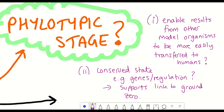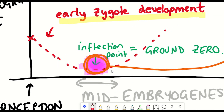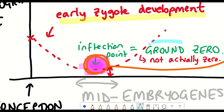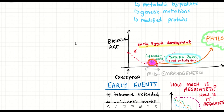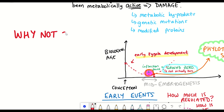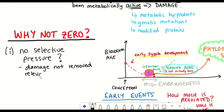Another interesting point in this article is that the biological age at ground zero must be above zero — that is, biological age never effectively reaches zero. Two key points support this. Firstly, during early embryogenesis, when biological age appears to be decreasing, there's no selective pressure to decrease it further beyond what is required for further development, suggesting that damage not removed would only become relevant much later in life, after the organism has already passed its genes to the next generation.